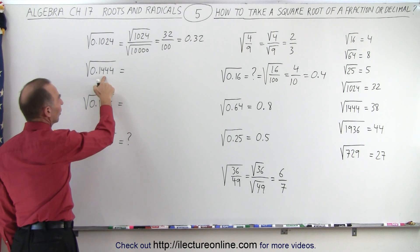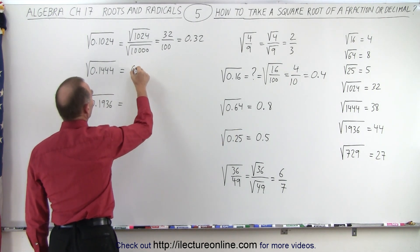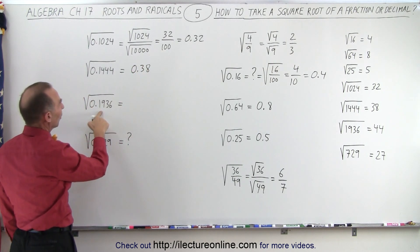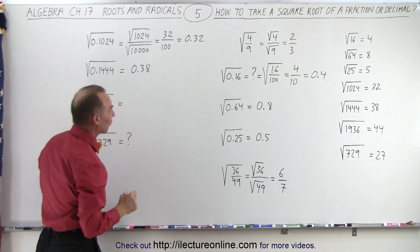Same over here, the square root of 1444 is equal to 38, so this can then be written as 0.38. The square root of 0.1936, well, the square root of 1936 is 44, so this is 0.44.